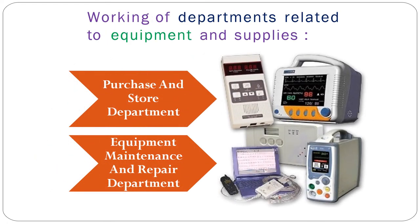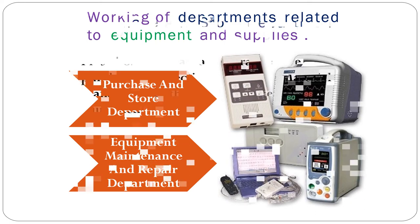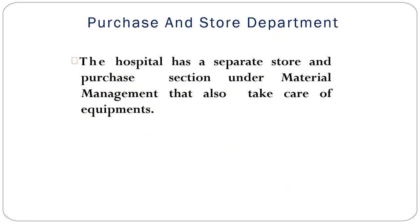The two departments concerned with material management are: the purchase and store department, and the equipment maintenance and repair department. Each hospital has a separate store and purchase section. This department handles the first five components of material management: planning, procurement, initial inspection, storage, and inventory control.